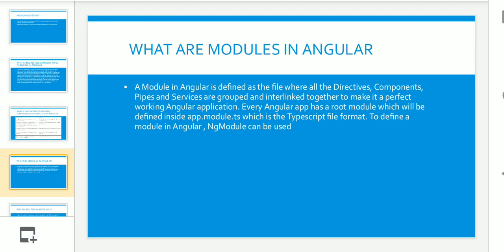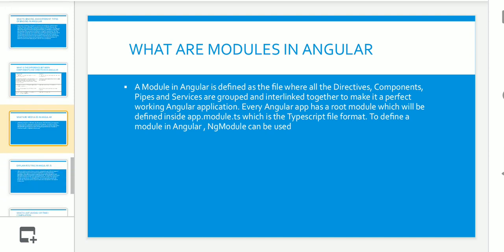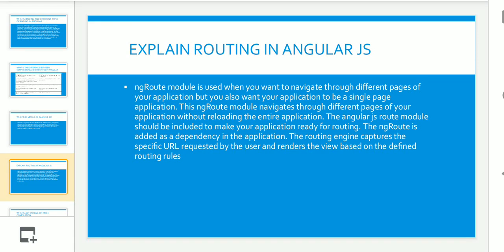The next question was: what are modules in Angular? A module in Angular is a file where all directives, components, pipes, and services are grouped and interlinked together to make a working Angular application. Every Angular app has a root module defined inside app.module.ts. To define a module in Angular, NgModule can be used.